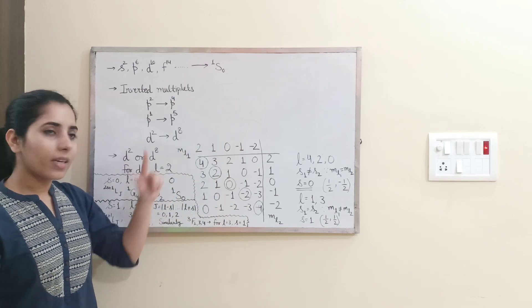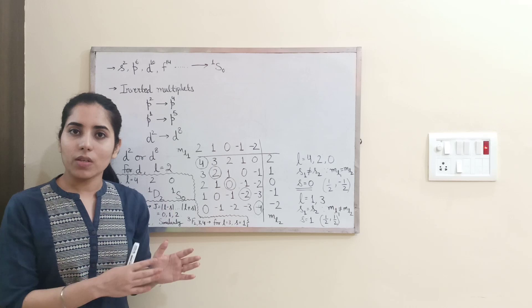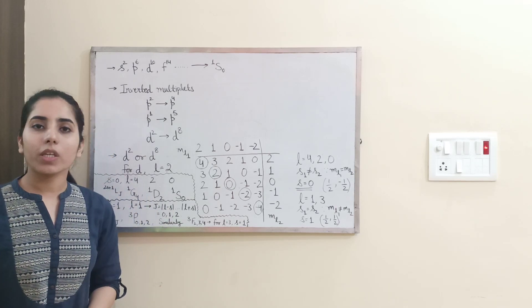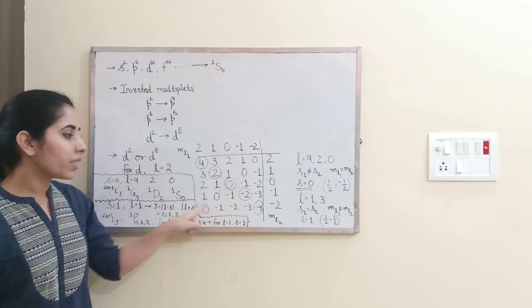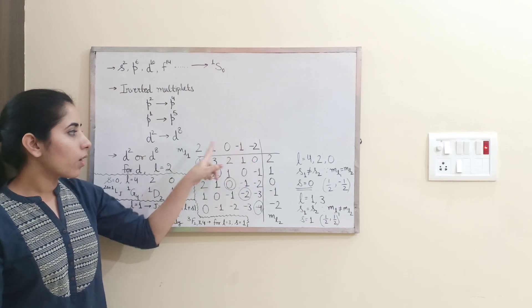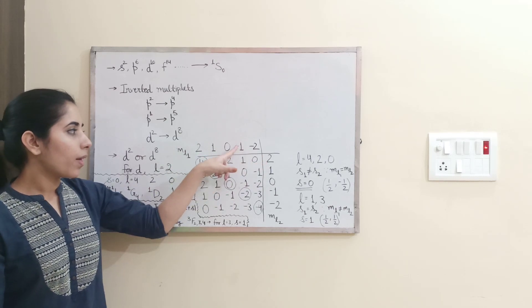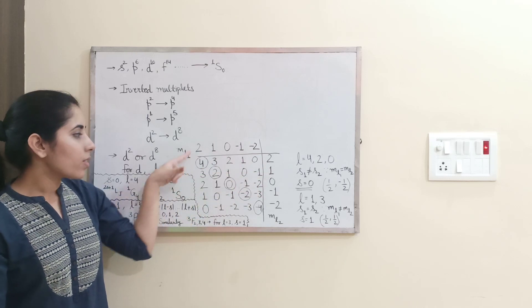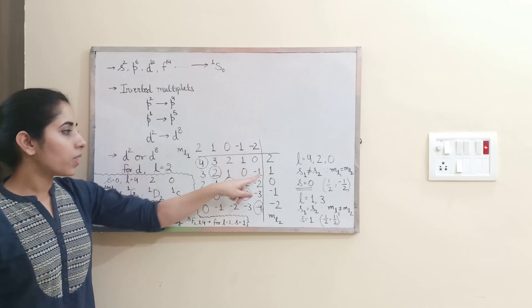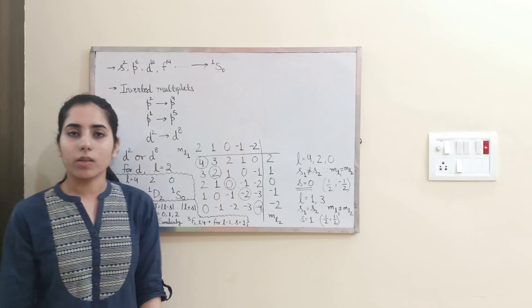Next. In the previous video, I have already told you or discussed this thing like how we will make this structure. What are the steps we need to follow? So just by following those steps, we are going to write these values. Add 2 plus 2, that's 4. 1 plus 2, that's 3. Then 0 plus 2, it's 2. Minus 1 plus 2, it's 1. Similarly, last one, minus 2 and plus 2, 0. 2 plus 1, 3. 1 plus 1, 2. And in the same way, we will just write all the terms.